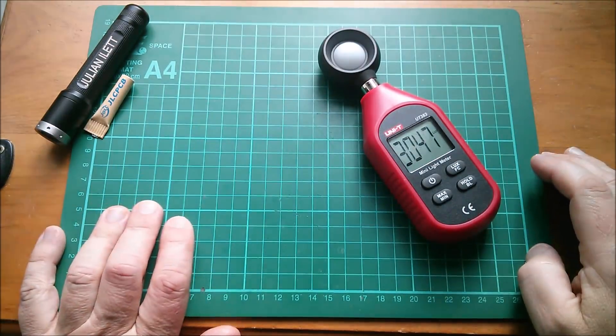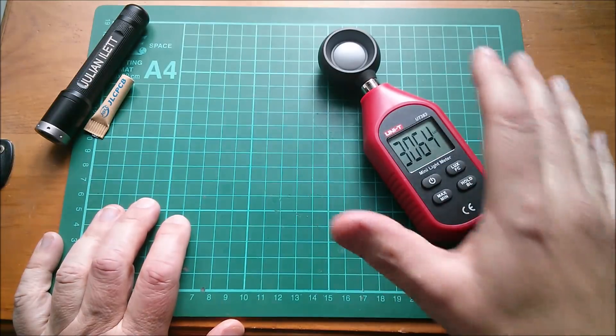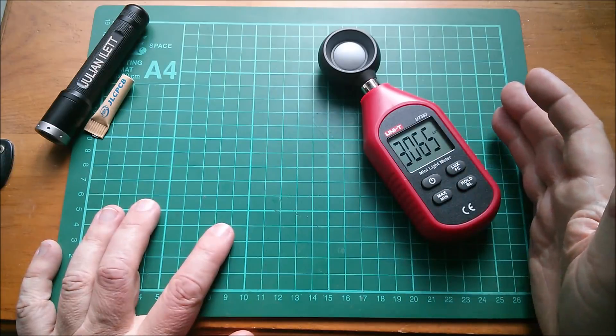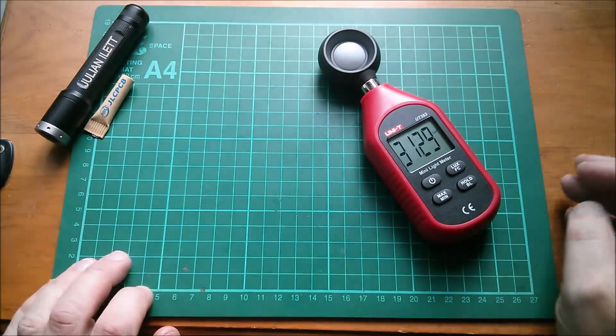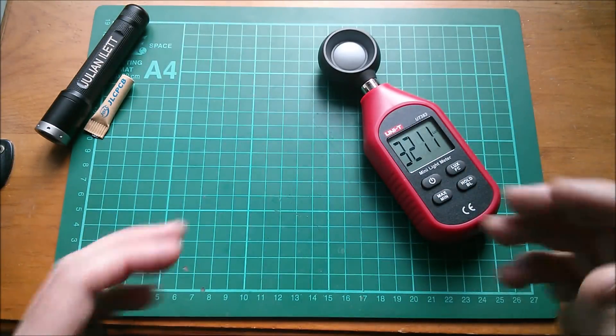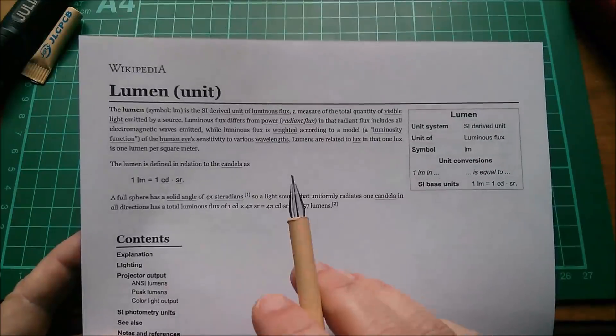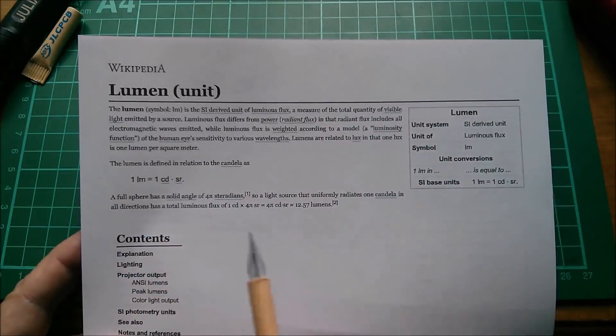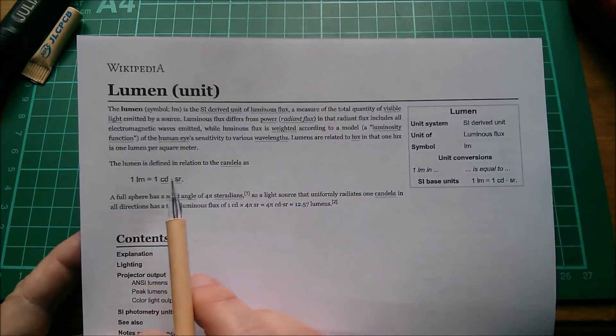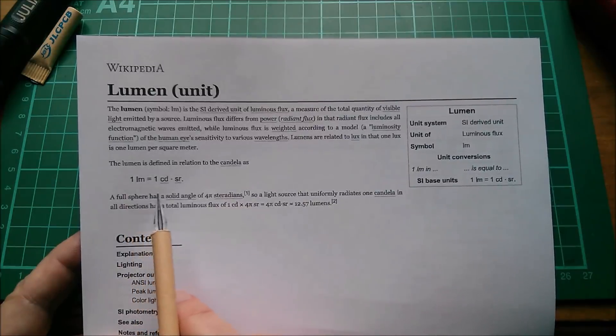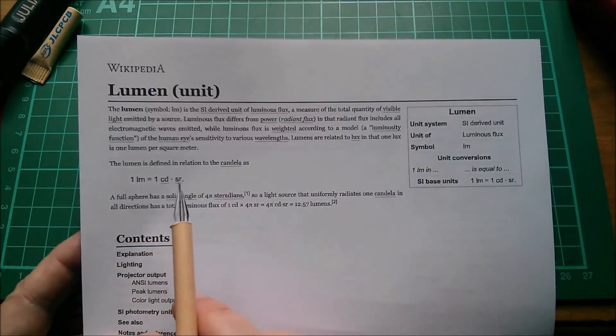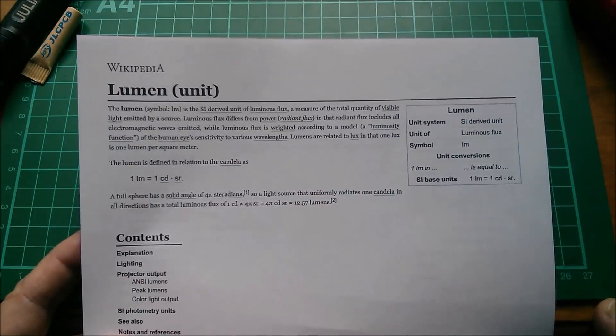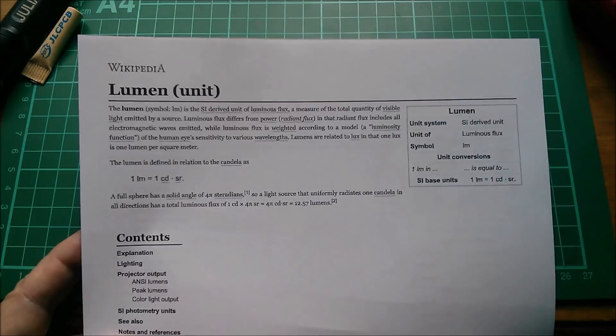Now the thing I always get asked when I do a mini review is how accurate is it? Did you check the accuracy? Well I can't, can I, because this is my only lux meter, so this is my reference standard. So well, I have to assume it's accurate. So there we are, lumens are related to lux in that one lux is one lumen per square meter. But look, lumens are defined in relation to candelas as one lumen equals one candela steradian. I'd never heard of steradians. I have now. Cheerio.